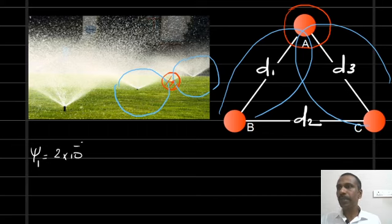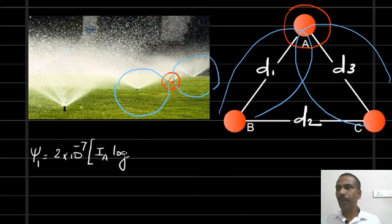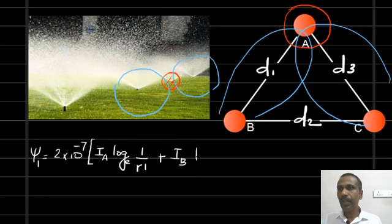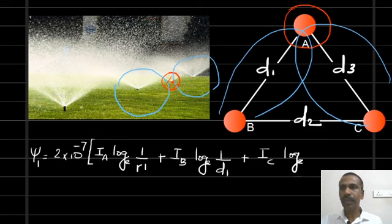Ψ₁ is equal to 2 × 10⁻⁷ into: the flux linkage due to its own current, where the current is IA into log base e of (1/r'), plus the flux from the second conductor B where the current is IB into log base e of (1/D1), where D1 is the distance, plus flux from the third conductor where the current is IC into log base e of (1/D3). This is the total flux linkage of conductor A.